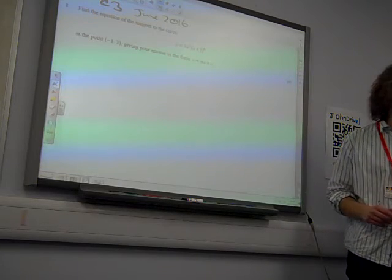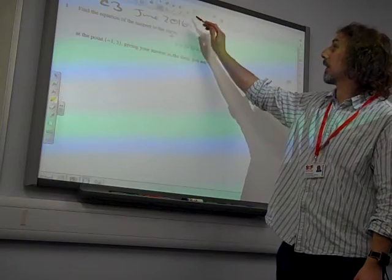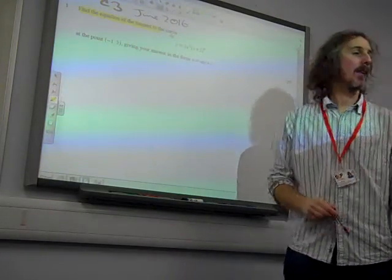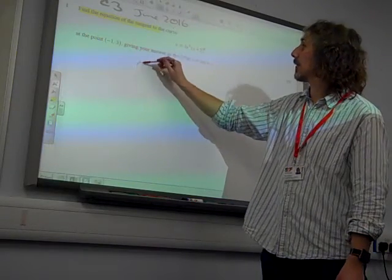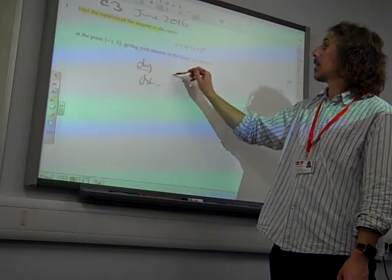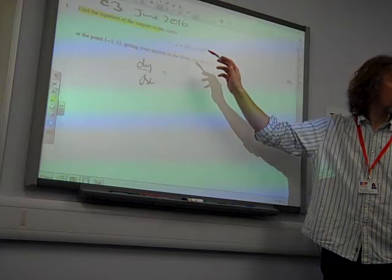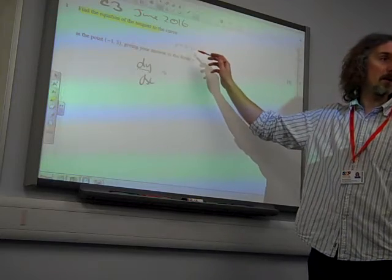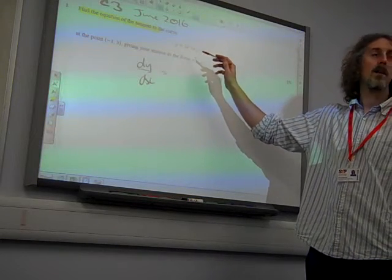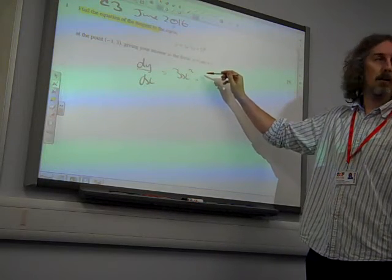Clearly, when it says find the equation of the tangent, we know because of our knowledge of maths that that means you're going to have to find dy by dx. So straight into finding dy by dx. And we're expected to recognise this as a product. Our product says u dv by dx plus v du by dx.